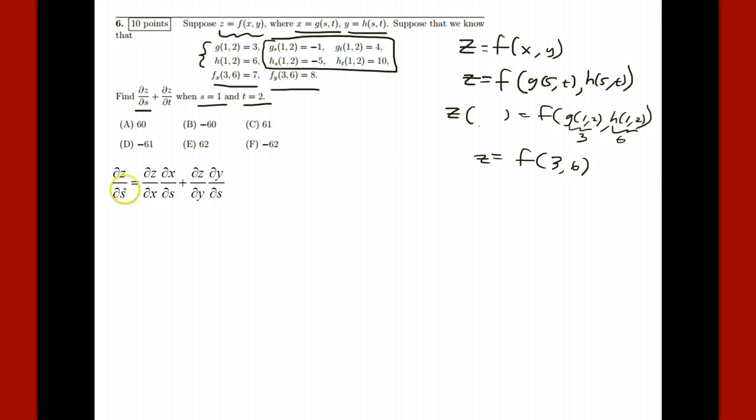Now, when I have this symbol up here, it's going to be f sub x. So this guy, zx, is f sub x. It's a 7. This guy, zy, is f sub y. It's an 8.